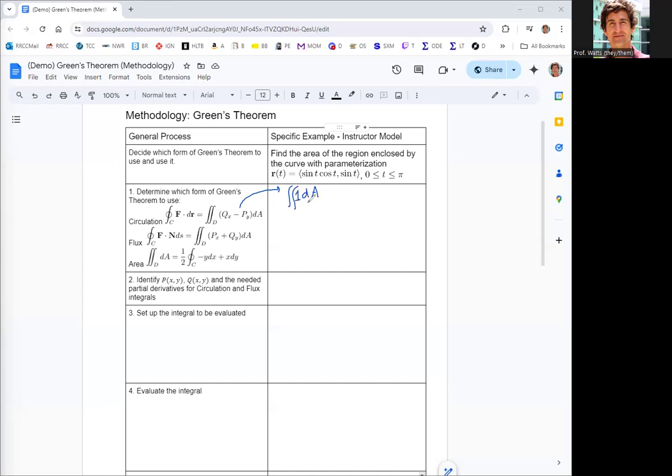The idea is that using the circulation form, we will let the integrating function be one, and so all we need is for qx minus py to be equal to one.